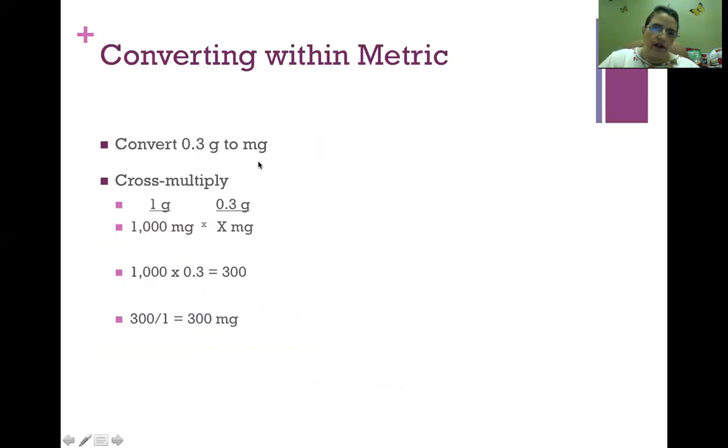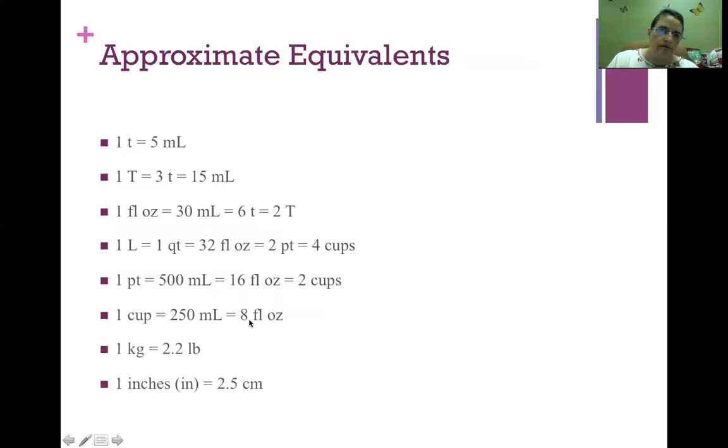Converting within metric, we're going to use that same cross multiplication formula. So if we want to figure out 0.3 grams to milligrams, let's do our conversion. We know that one gram is equivalent to 1,000 milligrams. So we're going to cross multiply. We know we want 0.3 grams. What is that in milligrams? So we multiply 1,000 milligrams times 0.3. When we do that math, it equals 300. Then we divide 300 by 1, and that gives us 300 milligrams.